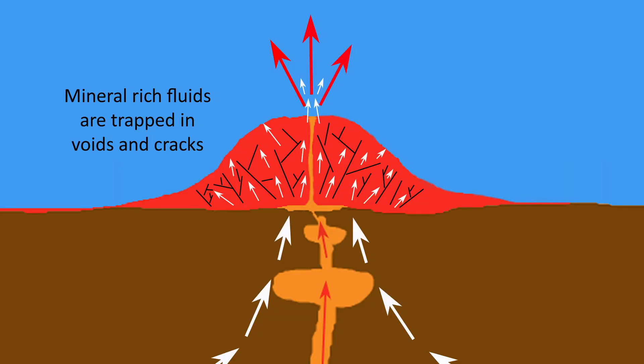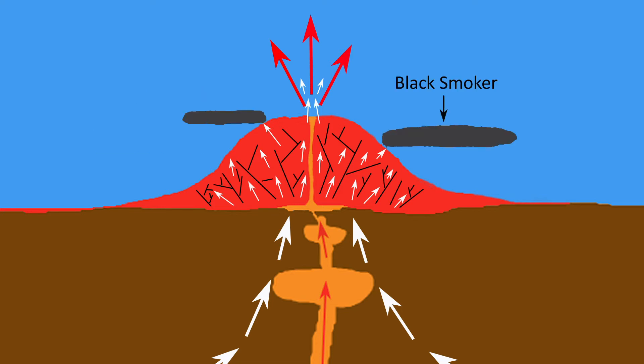These mineral-rich fluids are heated as they are drawn nearer the magma deep below the volcano. As they rise upward, they encounter the volcanic pile getting trapped in cracks and voids within it. Some of the more energetic fluids escape the pile and form vents known as black smokers, while other fluid is ejected from the volcano.